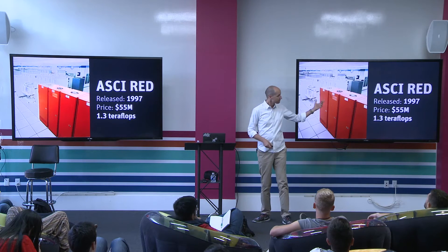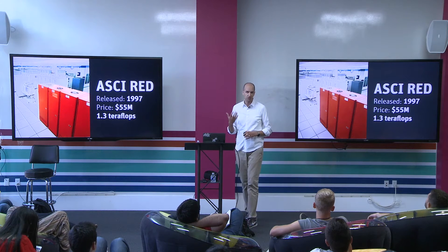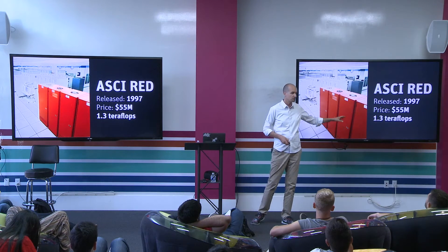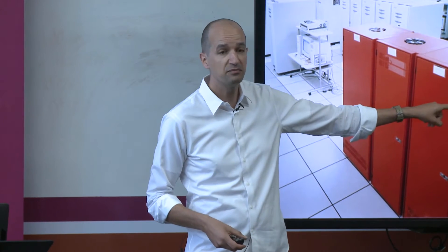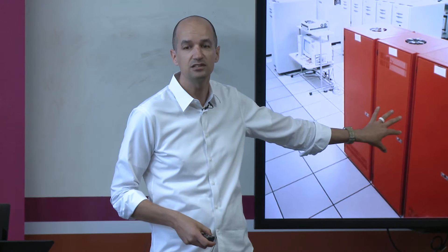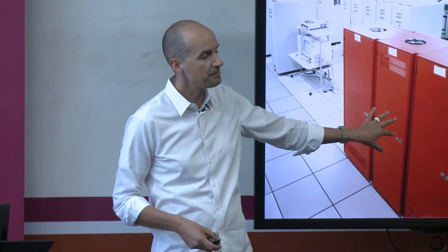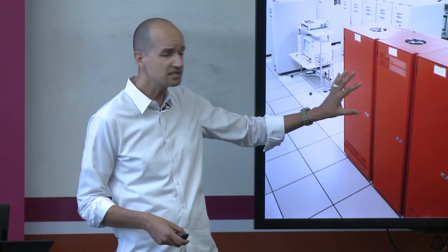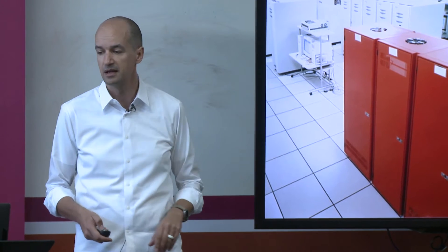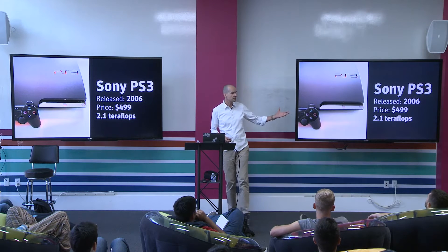What this looks like is this: in 1997, ASCII-RED was invented — the first computer to break through the one teraflop computing barrier, meaning one trillion floating point operations per second. It cost $55 million US dollars, was the size of a tennis court, and was used at Sandia National Lab for atomic weapons testing and climate modeling. A massive breakthrough for supercomputing. Nine years later, Sony brings out the PlayStation 3 for $499 — 2.1 teraflops. This is what computing looks like.